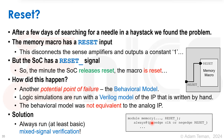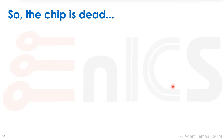What is the solution? Always run at least basic mixed-signal verification — take the Verilog wrapper, replace the model with the real analog block, and run the digital wrapper together with the actual block in the analog simulator. But sometimes, especially in our case, we were cutting corners, and when you cut corners things just don't work. So the chip is dead.